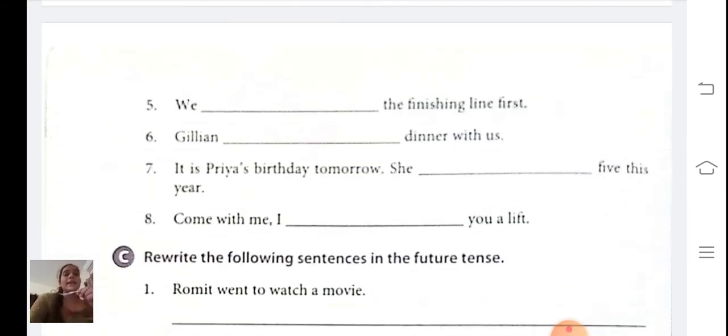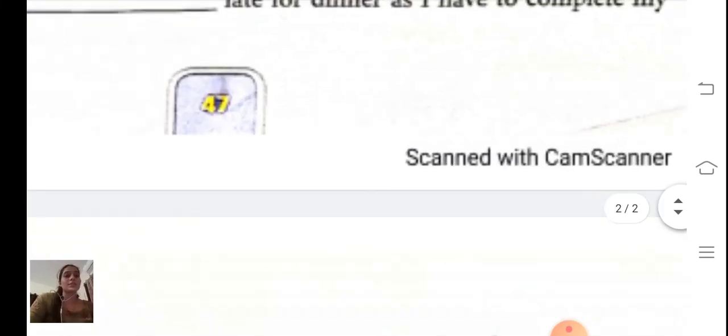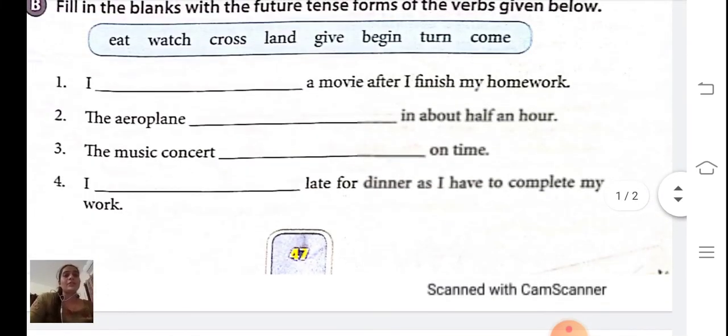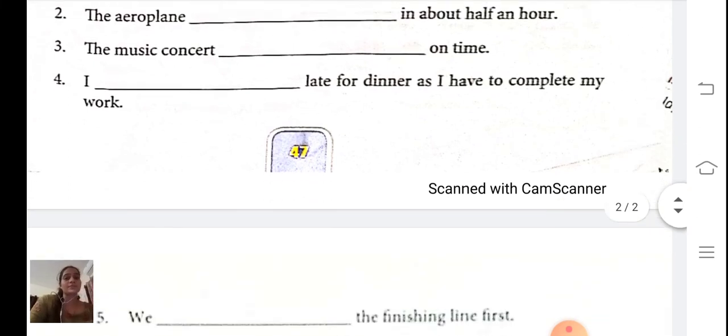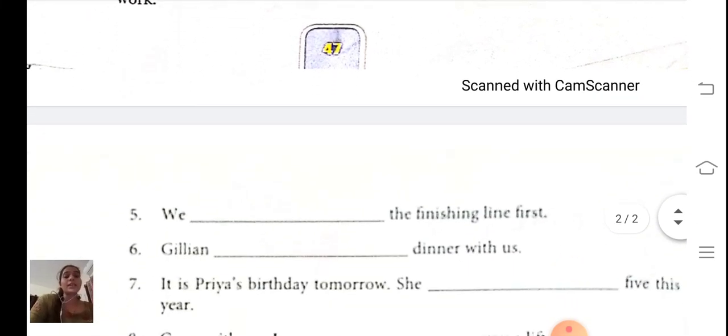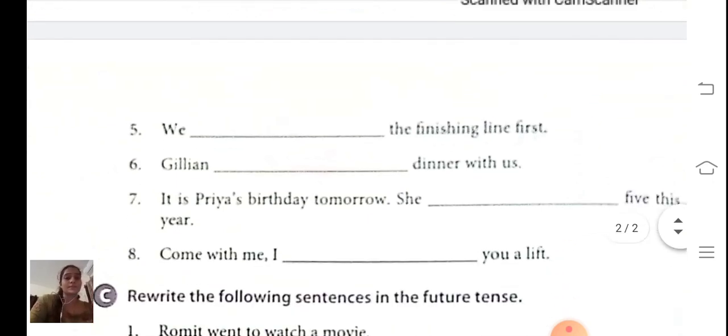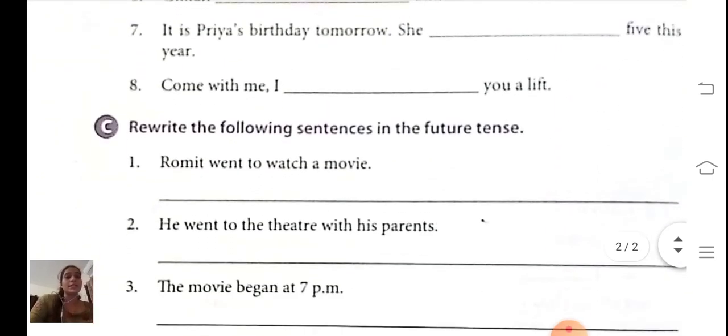Gillian dash dinner with us. Let me see. With dinner. It is a suitable verb. We will eat dinner with us. Sorry. Gillian will eat dinner with us. Okay. Complete this exercise.